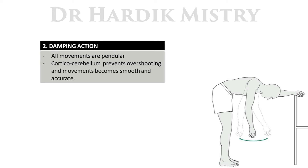Through its comparator and damping function, the cerebellum provides smooth coordination of agonist and antagonist muscles for acute purposeful movements. Without this, movements would be pendular and tend to overshoot. The corticocerebellum sends impulses to the cerebral cortex to discharge appropriate signals to the muscles, preventing exaggeration of movement and ensuring movements are smooth and coordinated.